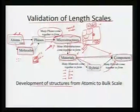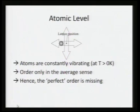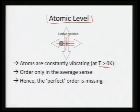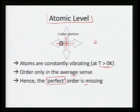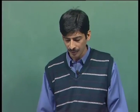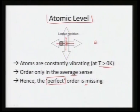Coming to the atomic level, an atom will have a lattice point and will start vibrating due to thermal fluctuations, having a mean position. Atoms are constantly vibrating at temperatures greater than 0 Kelvin. Ideally an atom should sit exactly at one point, but due to thermal fluctuations it is not — so order exists only in the average sense, and perfect order at the atomic level is totally absent.